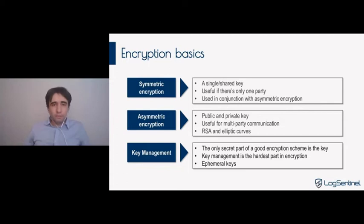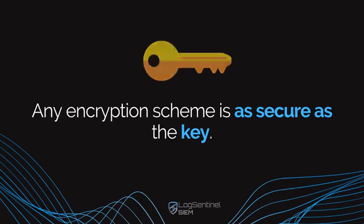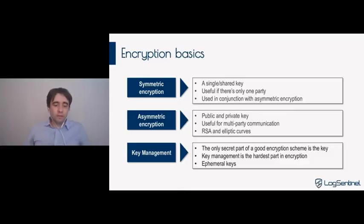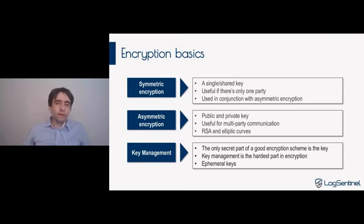A third, very important aspect of encryption — actually the most important one — is key management. Any encryption scheme is only as secure as the key. The only thing that provides security to an encryption scheme is the key. Everything else is public, everything else is peer-reviewed, implementations are public and scrutinized. We shouldn't assume that encryption is doing something in a secret way — security through obscurity should be avoided. Instead, the only secret bit is the key, and that's why it has to be protected.